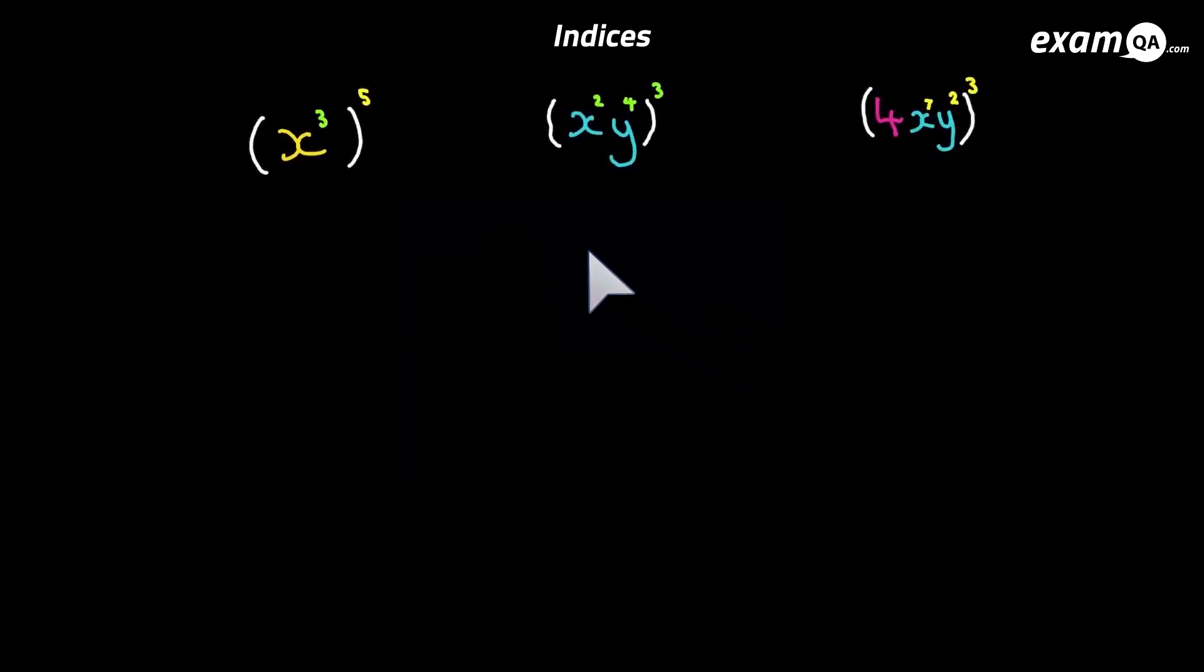Now up till now we've been adding powers. Now we're going to be looking at situations where we times powers. Now it's these situations here where we end up times in powers. So here we've got x to the power of three and all of that is to the power of five. So we times the powers. It's going to be x to the power of 15.